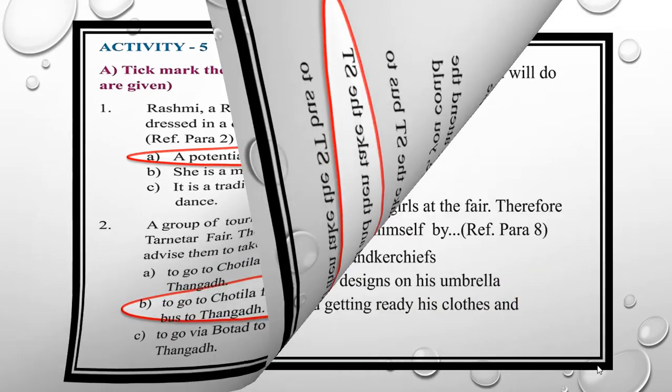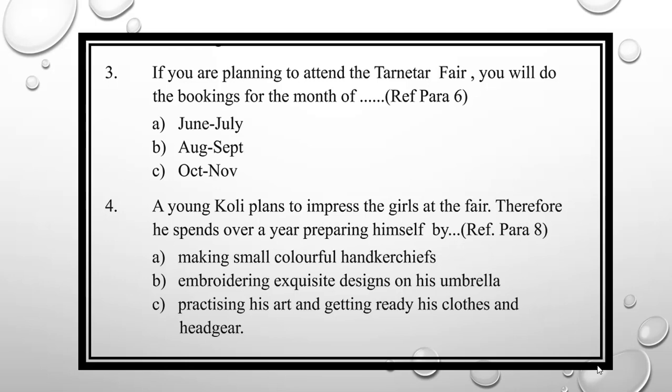The third question: 'If you are planning to attend the Tarnetar Fair, you will do the bookings for the month of...' Refer to paragraph 6. You must know when the fair is held. Options: A — June/July; B — August/September; C — October/November. The answer is B: August/September.